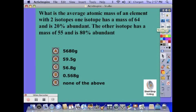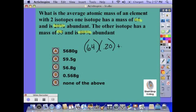Pause the icon and try this one on your own. Alright, on this one we have mass and its percent, then another mass and its percent. So 64 times 0.20 plus 55 times 0.80. Again, our mass has to be somewhere between 64 and 55. So I could eliminate A and B right off the bat.